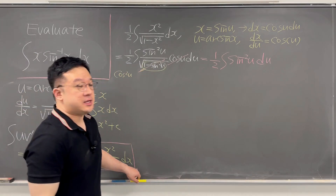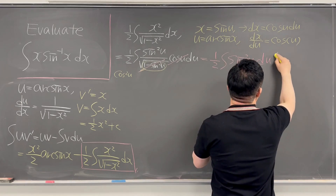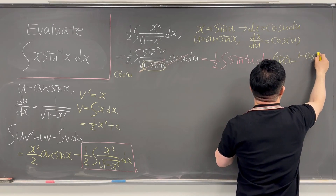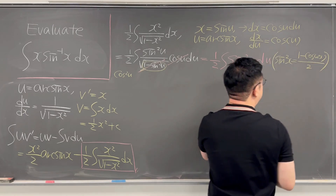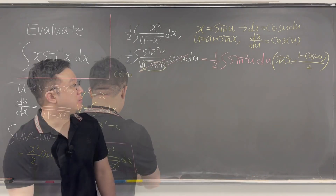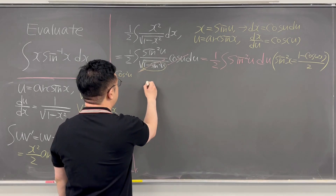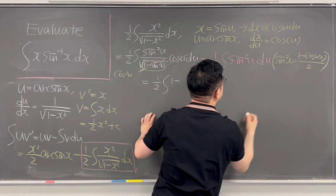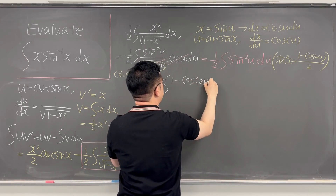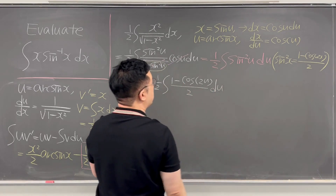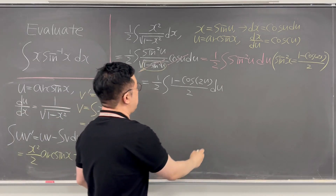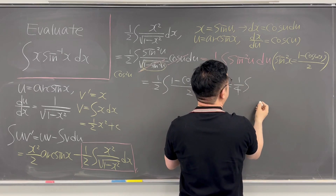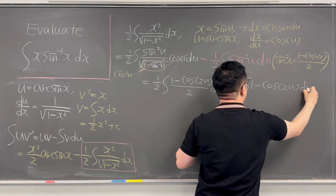Now we can focus on the trigonometric identity for sine squared: sine squared(u) equals (1 minus cosine(2u)) over 2. Using this identity, we can rewrite the integral as 1/2 times the integral of (1 minus cosine(2u)) over 2 du. Pulling out the 1/2 gives 1/4 times the integral of (1 minus cosine(2u)) du, which splits into 1/4 times the integral of 1 du minus 1/4 times the integral of cosine(2u) du.